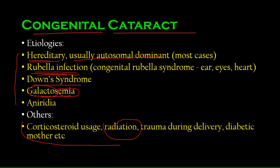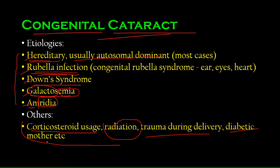Aniridia — 'an' meaning no, 'iridia' referring to the iris — is a condition where the child does not have an iris. This developmental disease can lead to cataracts. Other minor causes include corticosteroid use by the mother, radiation exposure during pregnancy, trauma during delivery, and a diabetic mother.